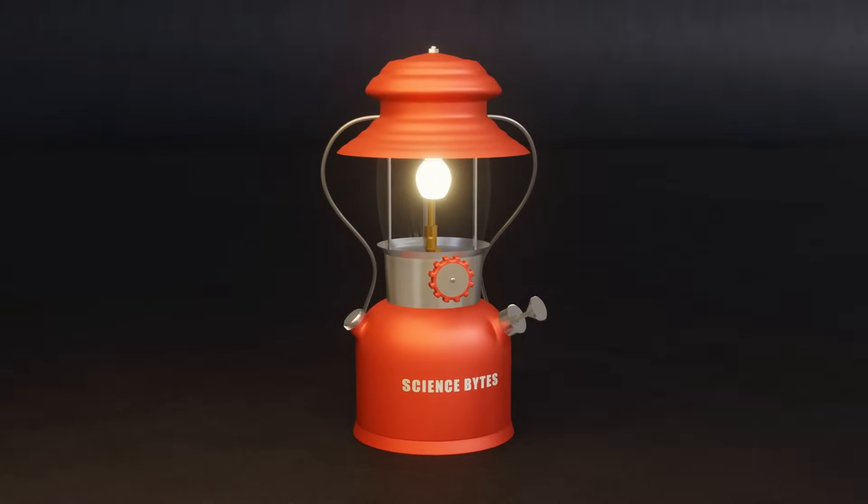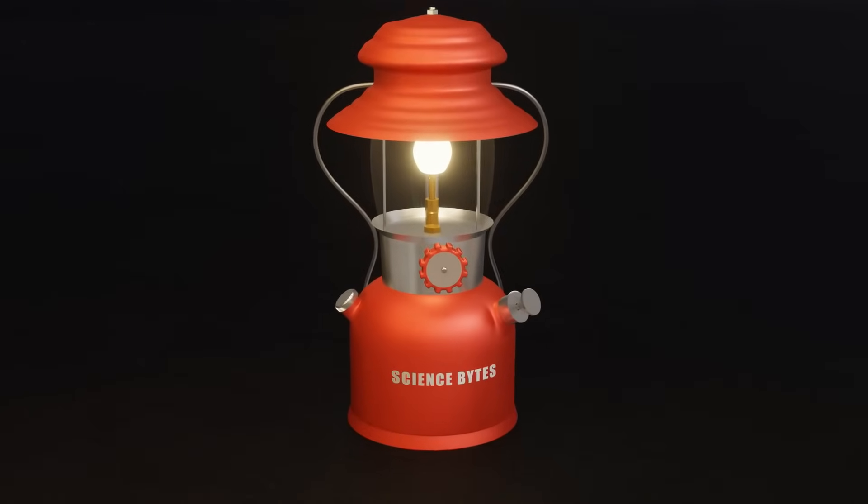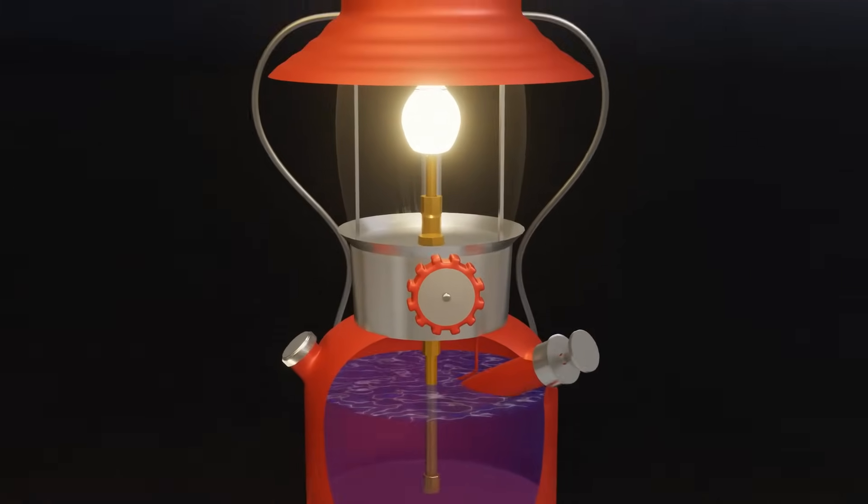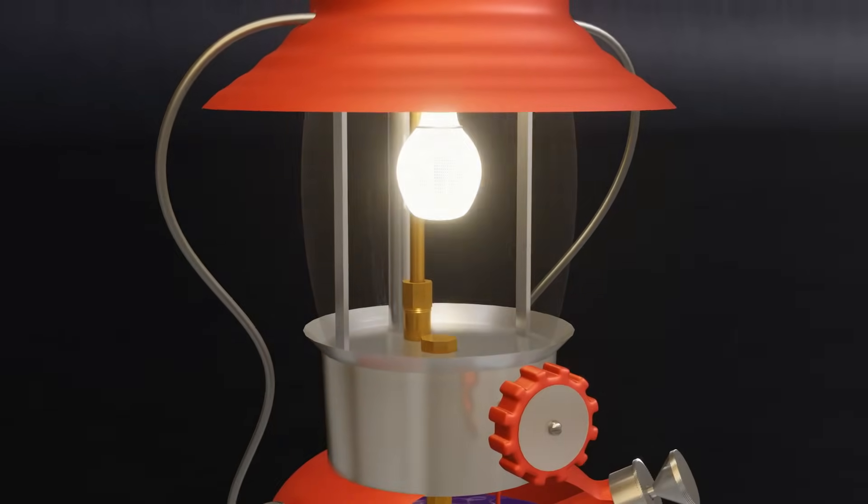I've always been fascinated by this little lantern that shines so brightly. One question that always sparked my curiosity was how the fuel travels from the bottom of the lantern to the top without a wick or motor, and what's the deal with that mysterious white ball inside?